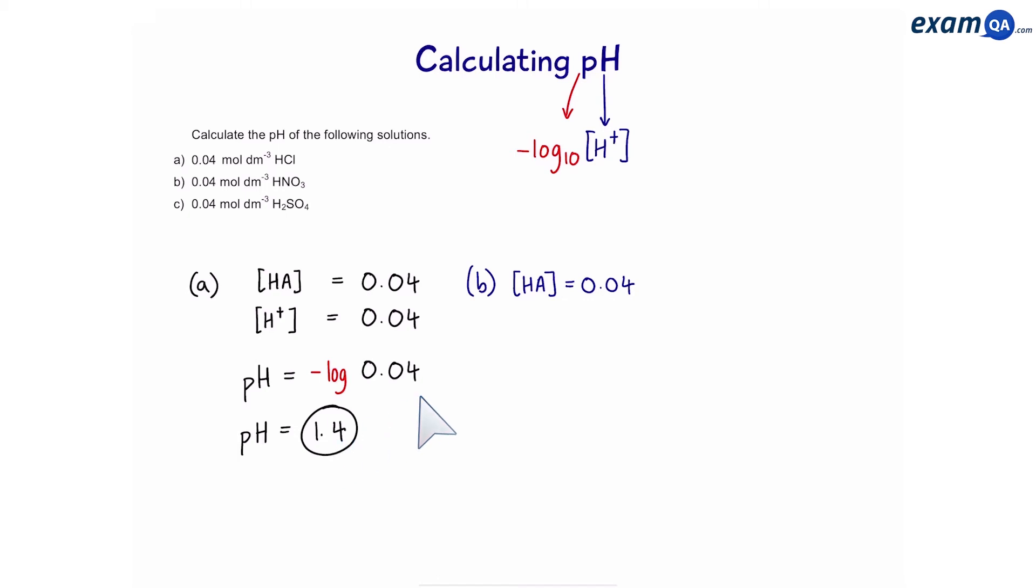So, if we know the concentration of the acid, that means the concentration of hydrogen ions should be the same. Next, we're going to do the same as before. pH is minus log of hydrogen ions, and that gives us pH equals 1.4.